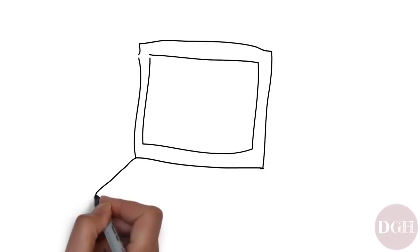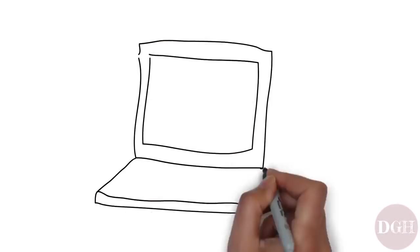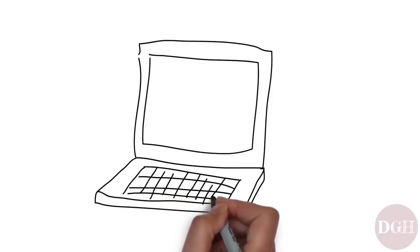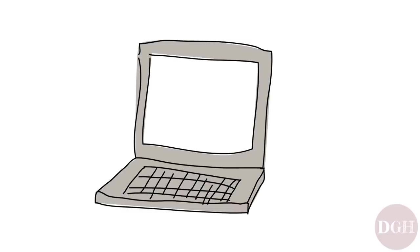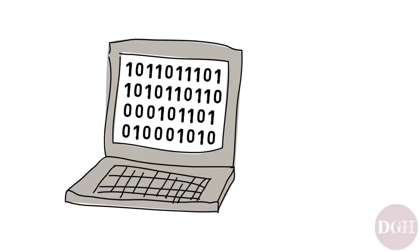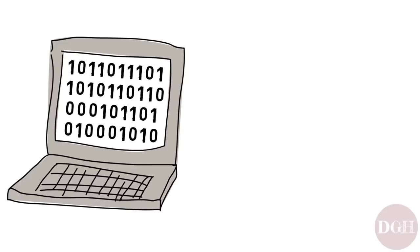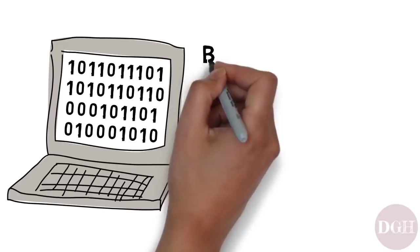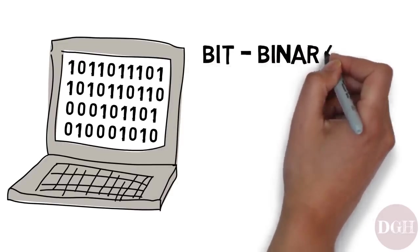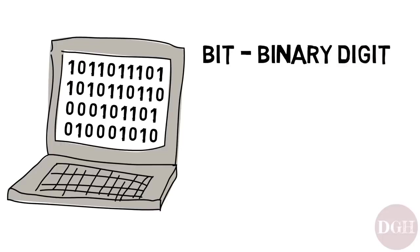Let's continue learning about how computers store data. As we learned earlier, computers use the binary system, which has only two numbers: 1 and 0. The word used to describe these binary digits, which can be either 1 or 0, is a bit — B-I-T. It's short for binary digit, and it's the smallest unit of data in a computer.